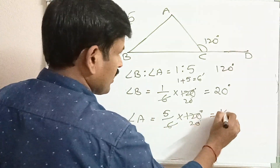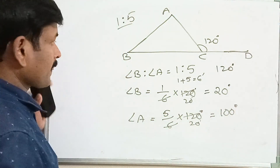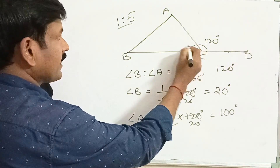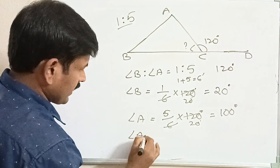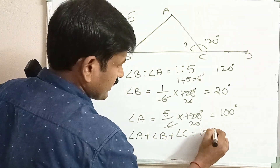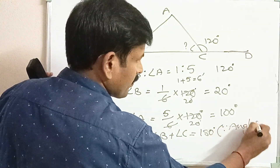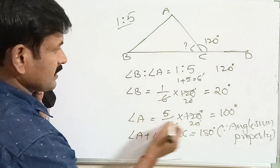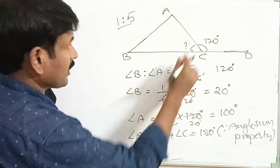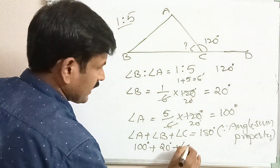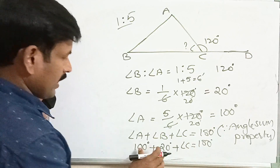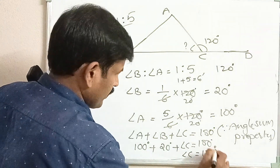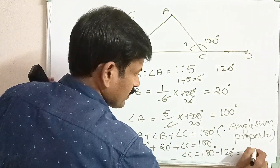Angle B measures 20 degrees and angle A measures 100 degrees. Now find angle C using the angle sum property: angle A plus angle B plus angle C equals 180 degrees. Substituting: 100 degrees plus 20 degrees plus angle C equals 180 degrees. So 120 plus angle C equals 180. Therefore, angle C equals 180 minus 120, which equals 60 degrees.